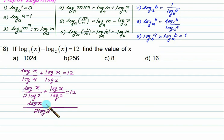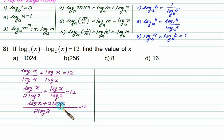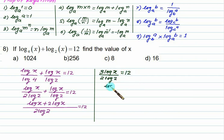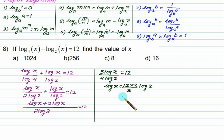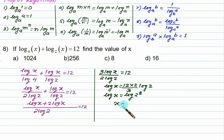After taking LCM, the numerator becomes log x plus 2 log x, which equals 3 log x, over 2 log 2 equals 12. So log x equals 12 times 2 divided by 3, times log 2, which gives 8 log 2. Therefore log x equals log of 2 to the power 8.